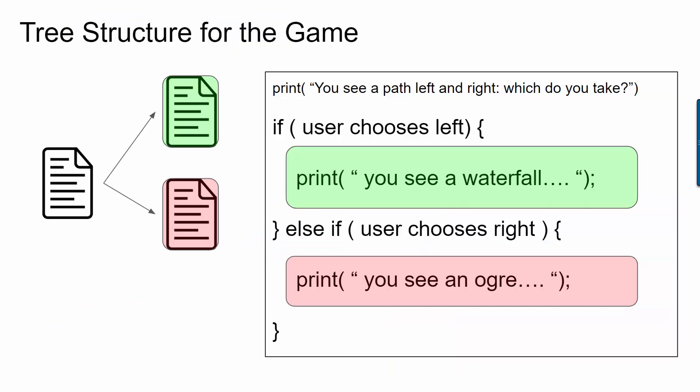The usual approach to programming something like this would be to use if statements. And we did something like this in the first semester. So you could have the introduction to your game be a print statement. In my version we have a path to the left or the right. And then you have the user make a choice and then you have if statements.